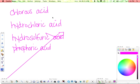identify whether it is binary or ternary. If it has the prefix hydro, then it is binary. If it does not, it is ternary. So hydrosulfuric is binary. Phosphoric is ternary.